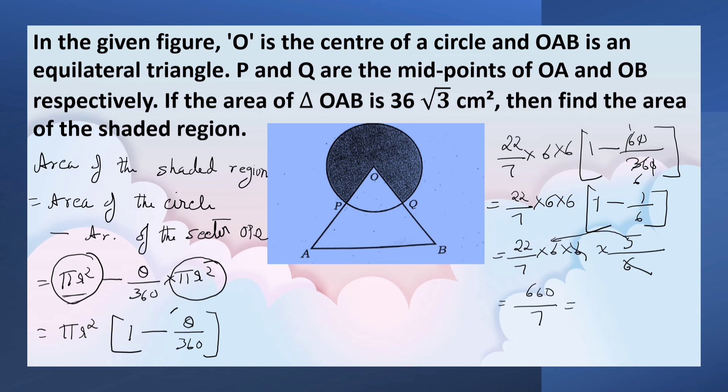Which is equal to... 7 times 9 is 63, carry 3... 30, 7 times 4 is 28... 7 times 2... This is the answer. This is the area of the shaded region.